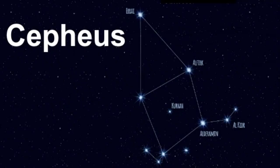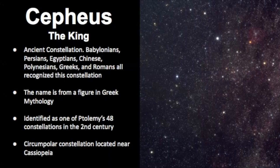Welcome, my name is Janine, and in this video we will learn about the constellation known as Cepheus. Cepheus is represented as a king, and it's an ancient constellation that the Babylonians, Persians, Egyptians, Chinese, Polynesians, Greeks, and Romans all recognized. The name is from a figure in Greek mythology known as Cepheus, and it was identified as one of Ptolemy's 48 constellations in the 2nd century, which was the authority in astronomy for many centuries.